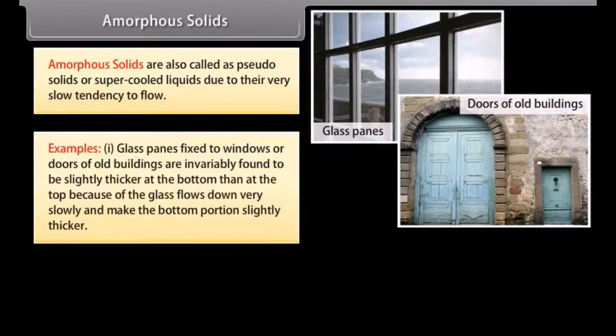Example 1: Glass panes fixed to windows or doors of old buildings are invariably found to be slightly thicker at the bottom than at the top because the glass flows down very slowly and makes the bottom portion slightly thicker.